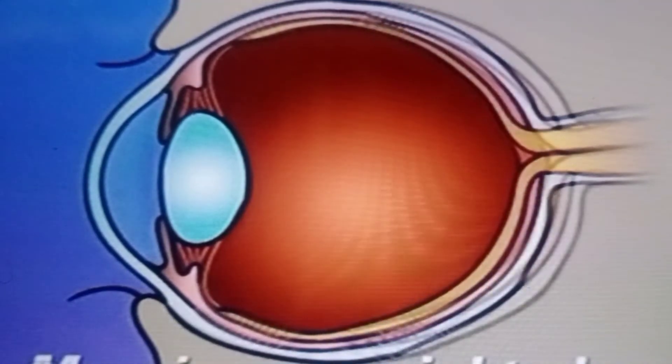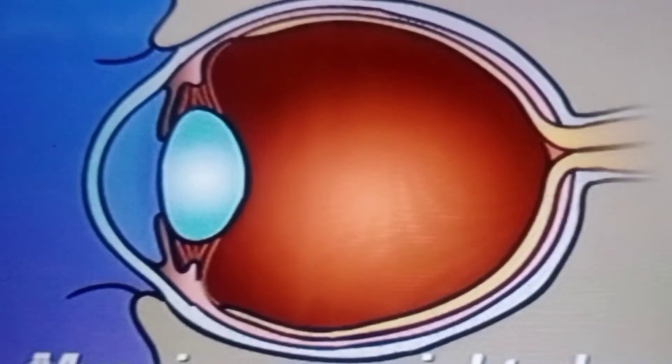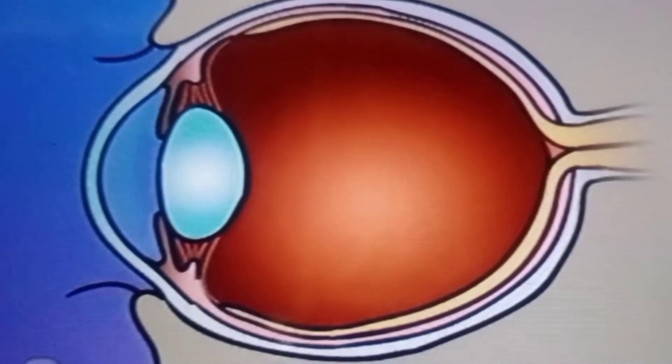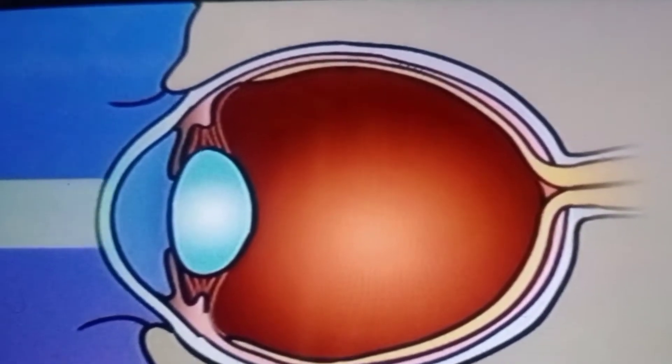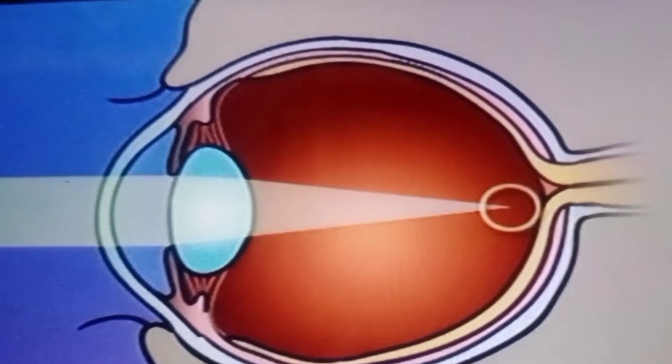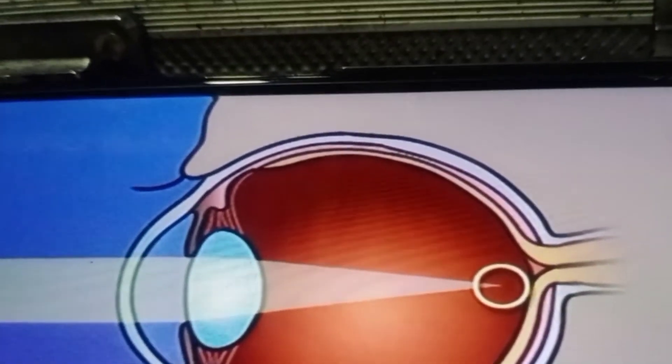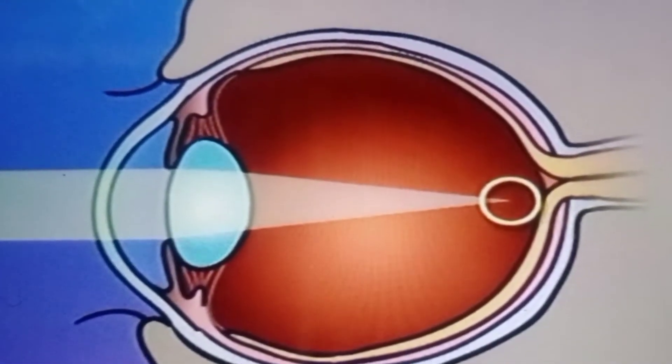Myopia, or nearsightedness, occurs when the shape of the eye is too long or the curve of the cornea is too extreme. In this case, light rays are focused on a point in front of the retina instead of on the retina itself.